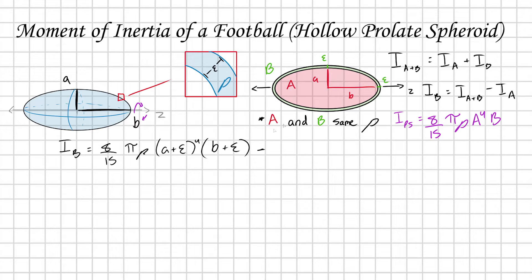And we have minus I_A, which is 8/15 times π times ρ, and now we have just lowercase a^4 times lowercase b, because that's just the inner parts. Let me pull out the constants to make life easier.